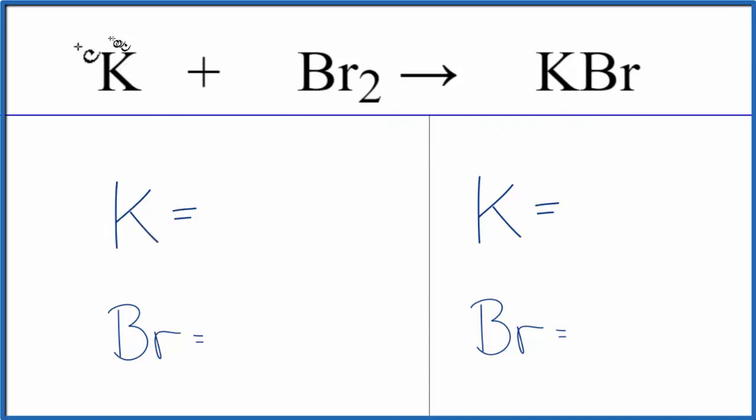We have potassium, and we just have one of those. It's not written, but there's a one there. So we have one potassium, and then for bromine, we have two of those.